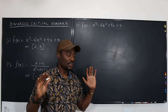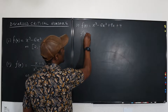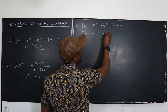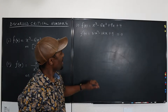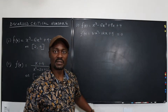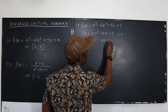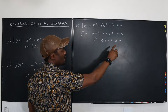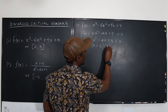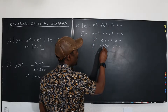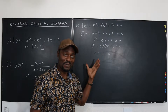For this first example, we take the derivative and equate it to zero to find our critical numbers. We get f prime of x equals 3x squared minus 12x plus 9 equals zero. Dividing through by three gives x squared minus 4x plus 3 equals zero. Factoring gives x minus 3 times x minus 1 equals zero, so x equals 1 and x equals 3 are our two critical numbers.